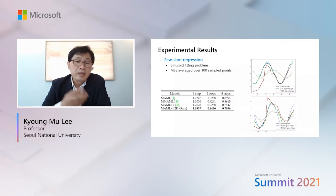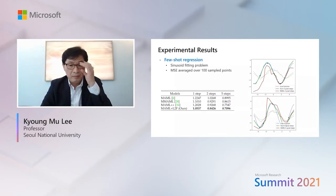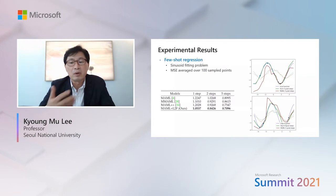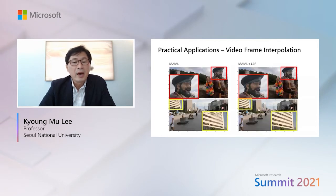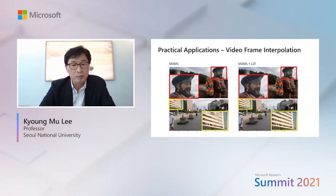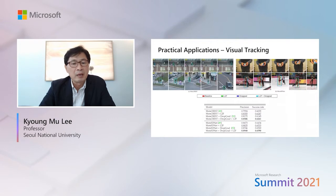As many of you have noticed, few-shot learning algorithms are only evaluated on simple problems. To further stress the generalizability and effectiveness of L2F, we perform experiments on more practical problems such as video frame interpolation and visual tracking. When applying meta-learning to video frame interpolation, L2F better adapts to diverse scenes and shows better interpolation results compared to MAML. Similarly, when applying meta-learning to visual tracking, L2F greatly outperforms MAML and other baselines.